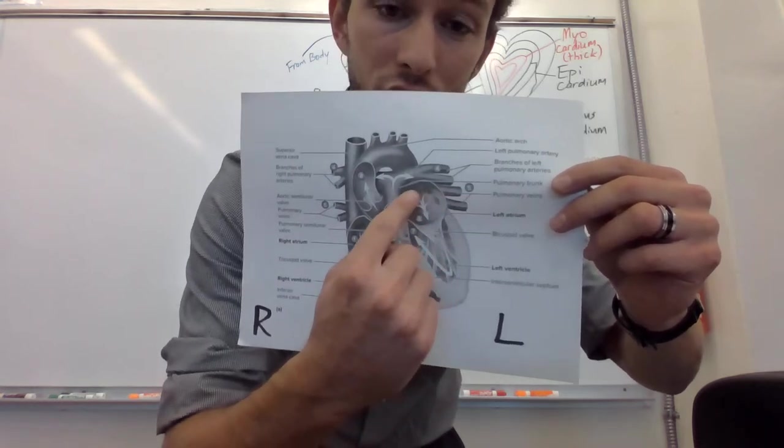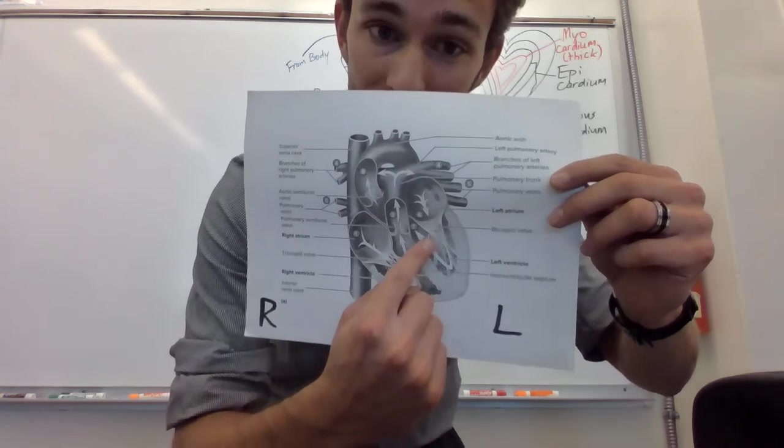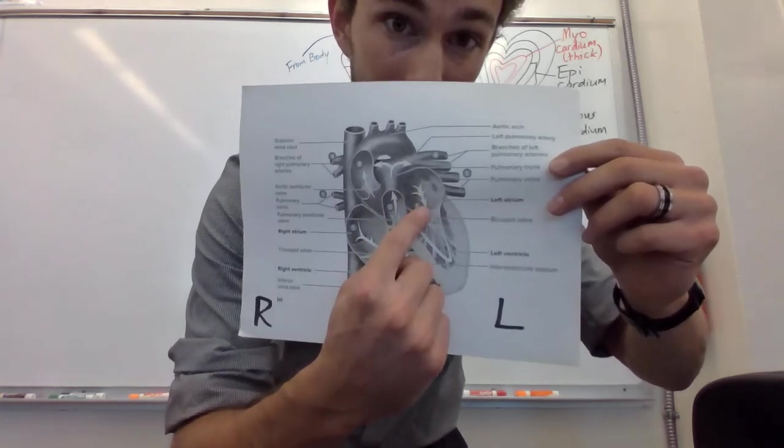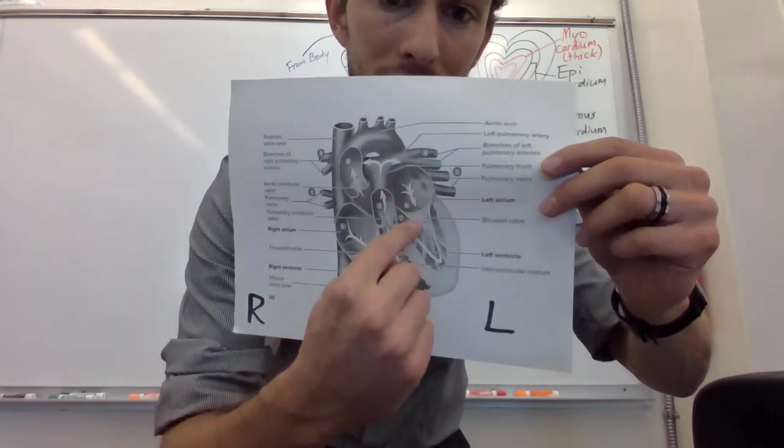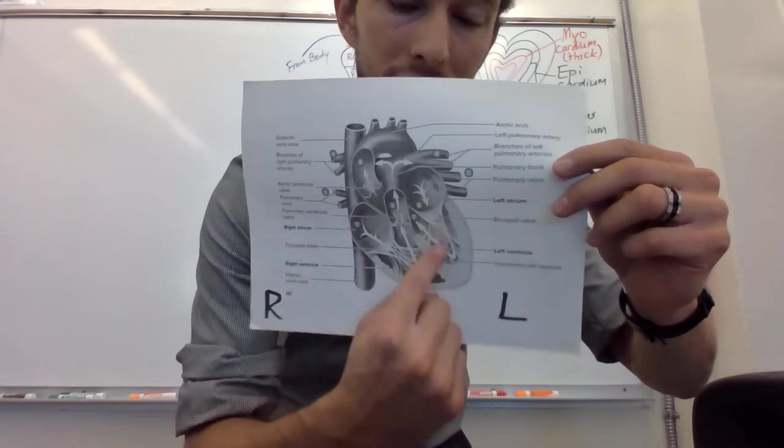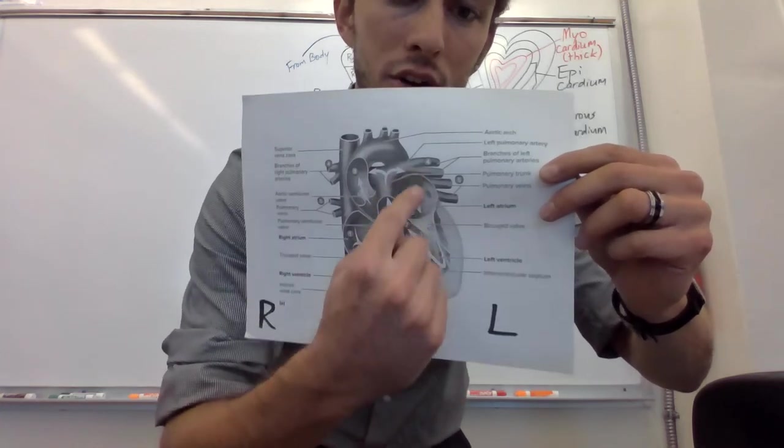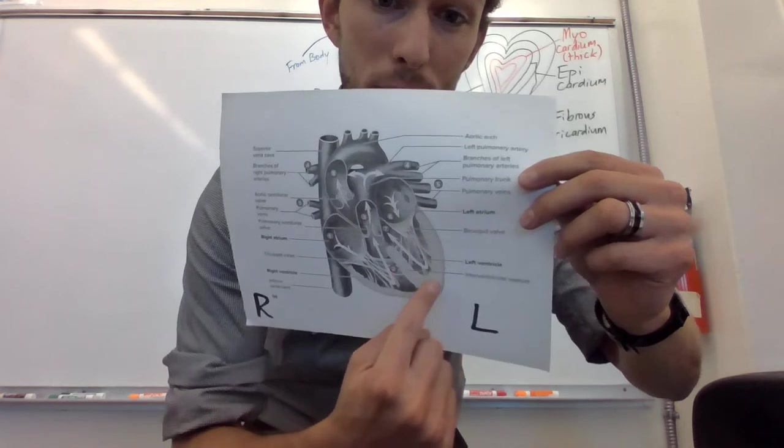The left atria will contract and blood will flow through the bicuspid valve, which is called the mitral valve. It's going to pump it through that valve, once again, connected by chordae tendineae to hold that valve in place. Go to the left ventricle, super thick and strong, because it's got to pump it to the body.